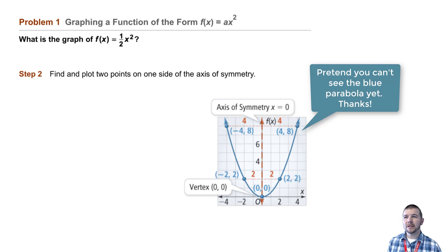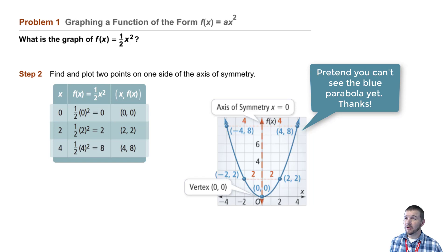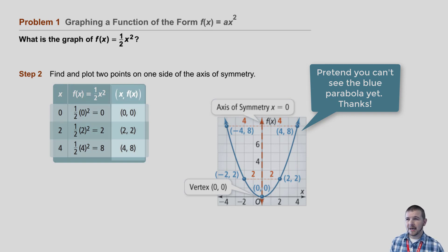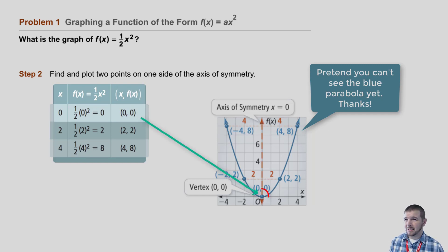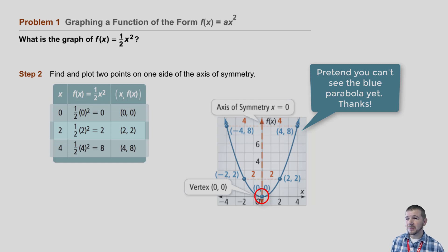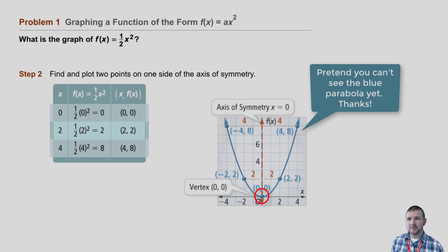Step 2: find and plot two points on one side of the axis of symmetry. We can do this with a table. Note the left-hand column x, the middle column a process column where we apply 1 half times x squared, and on the right-hand side are ordered pairs associated with each input value x. For x equals 0, substituting 0 into f gives an output of 0, so the ordered pair is 0 comma 0 — the origin, already plotted in step 1. Choosing x equals 2: 2 squared is 4, and 4 times 1 half is 2, giving the ordered pair 2 comma 2. We plot that on the graph as well.